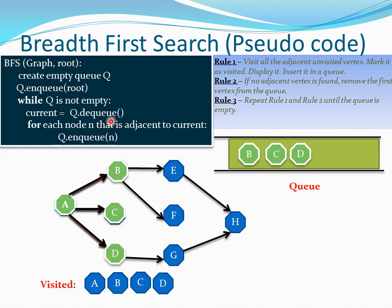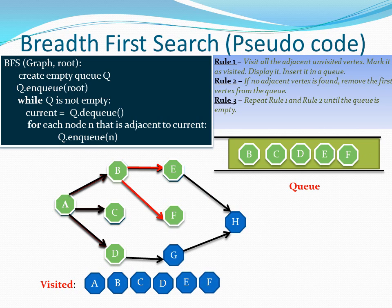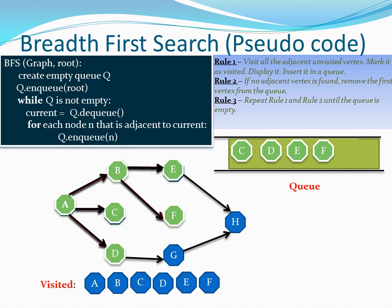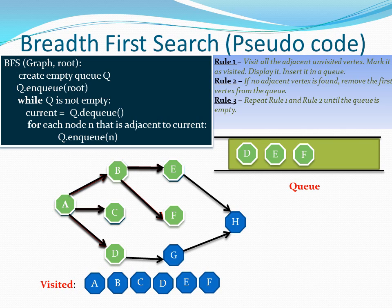We dequeue B from the queue and iterate on it, representing the current node as B. We visit its adjacent vertices in the for loop. We are done with B, so B is automatically removed from the queue and we start from C next. We dequeue C and process it as before. Next in our queue is D. Current now represents D, and for each adjacent node we iterate — D has one unvisited vertex, so we enqueue it into the queue. We are done with D, so we remove D from the queue.